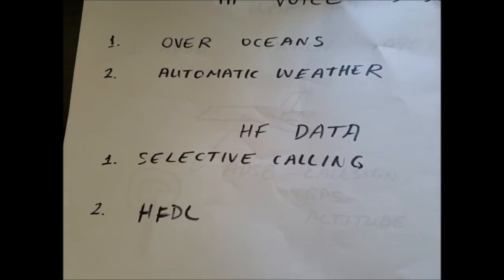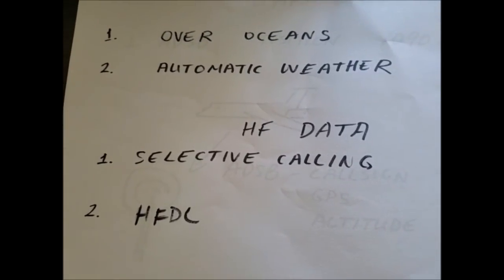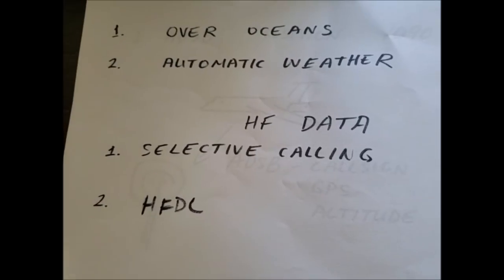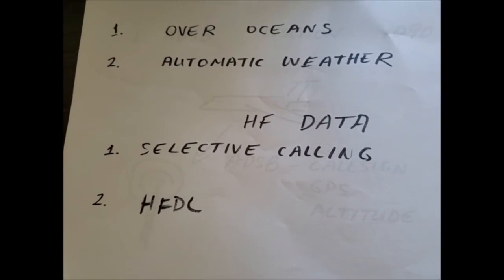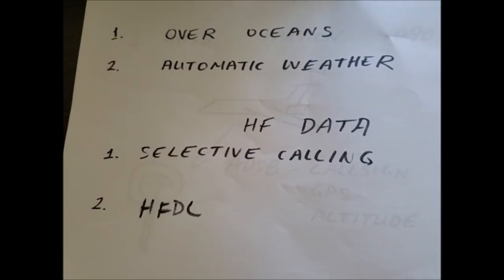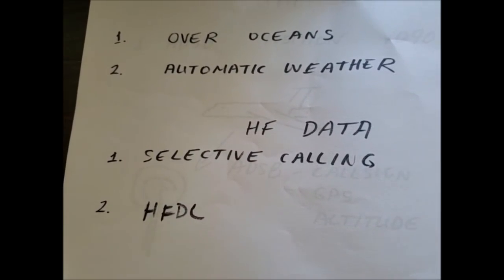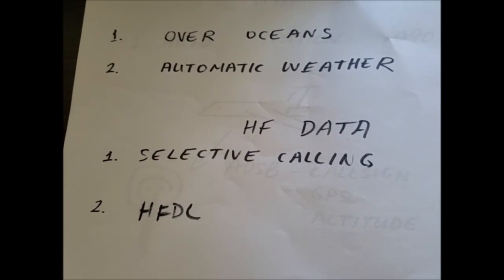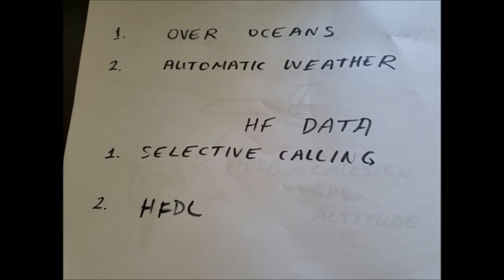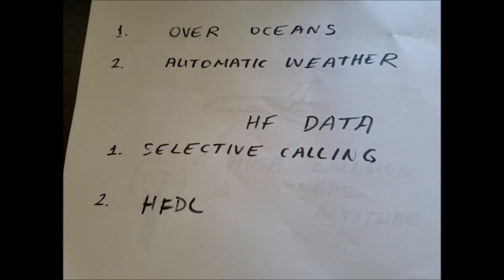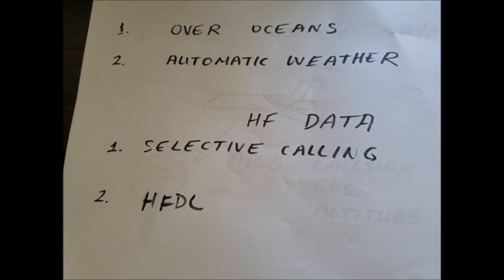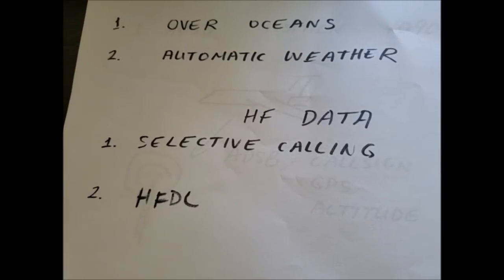One of the more important things that goes on in HF is HF data, or selective calling, also known as paging. Since most pilots don't sit and watch the radio all the time, when other stations need to get in contact with them, they'll send a selective call or SELCAL to the aircraft, and the radio will recognize this and start blinking so that the pilots will know that they should pick up the radio.